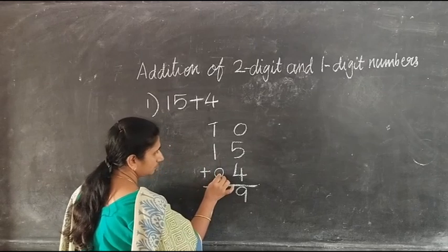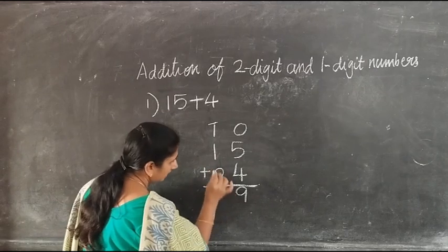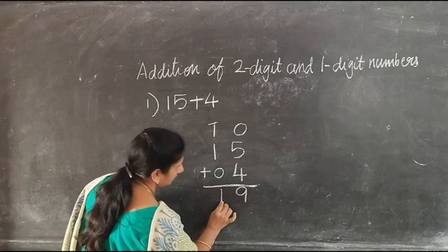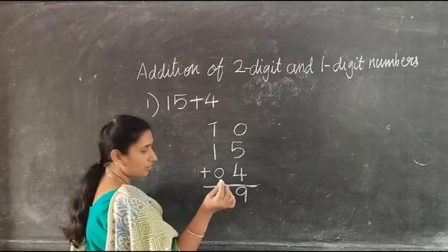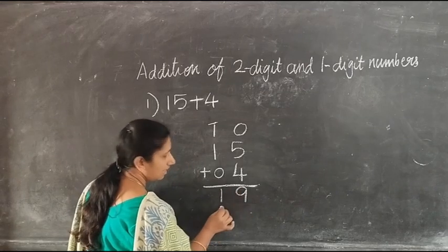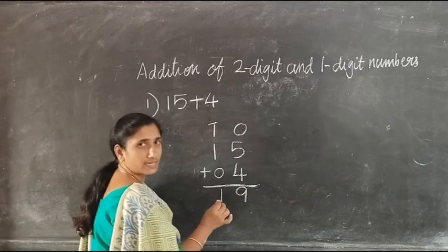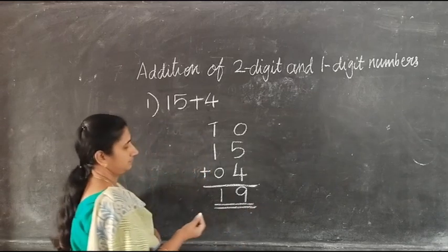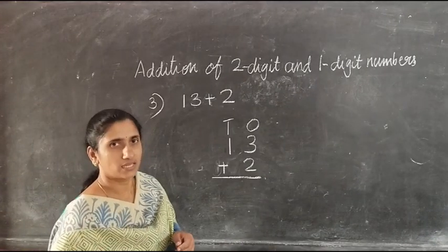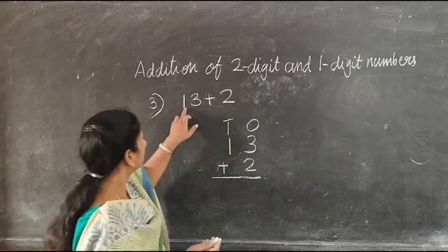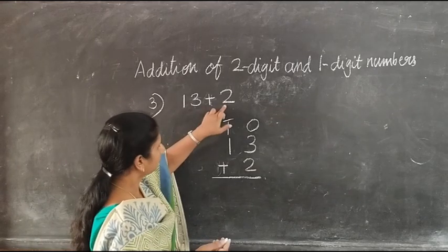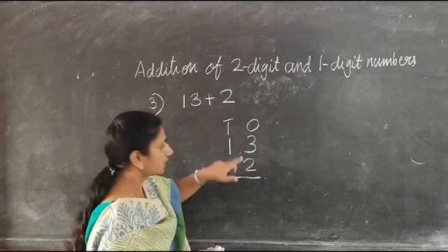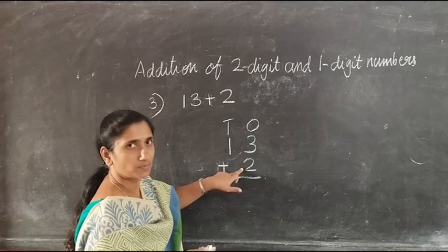Here also, we have to write 13 and 2 in the tens and ones columns.